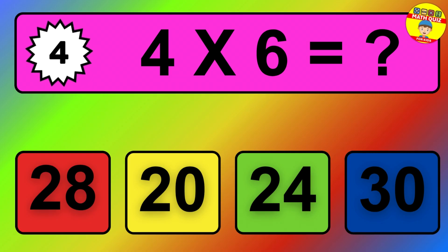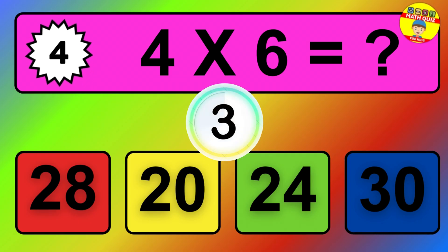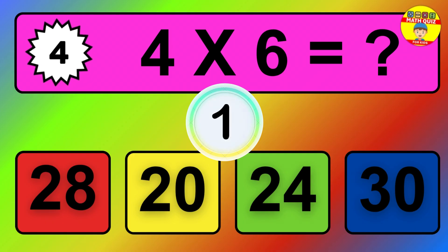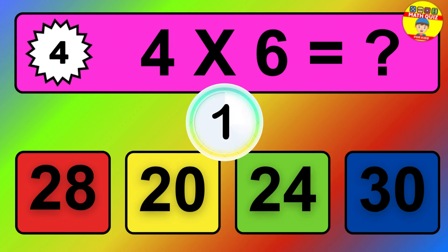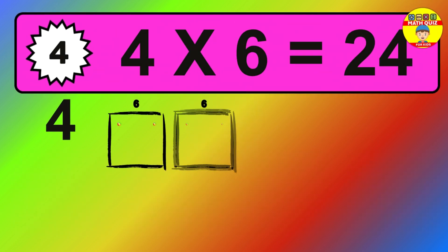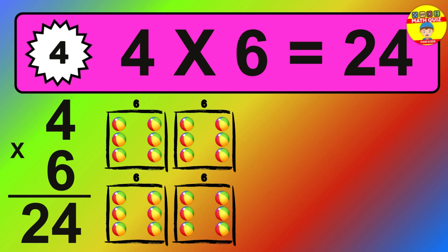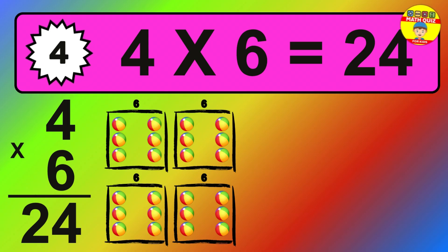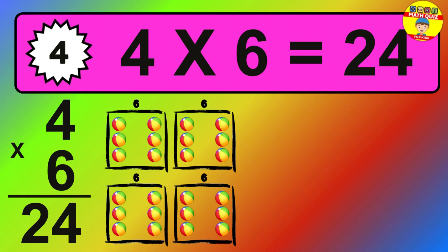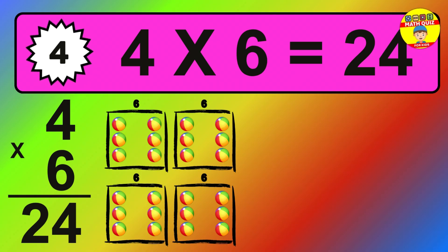Question four: four times six equals what? The answer is: four times six is 24. To calculate, we have four groups with six balls each one. So how many balls do we have? 24 balls.